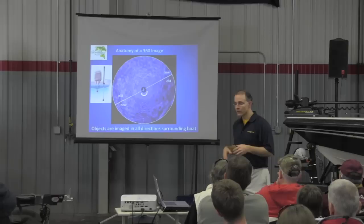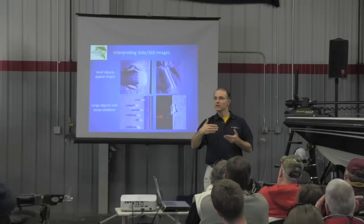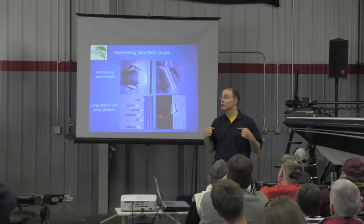It would be useful to give you a little background about how we can interpret this information to distinguish different types of structure. One of the first things to note is that things that are really hard appear bright in whatever color palette is being used. The intensity of the color reflects the amount of sonar energy transmitted back to the transducer. So if a very hard object — like concrete bridge pilings — is reflecting a lot of sonar energy back to the transducer, those bridge pilings will appear really bright.